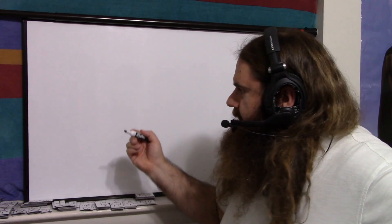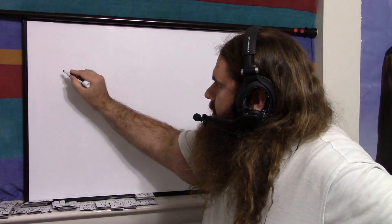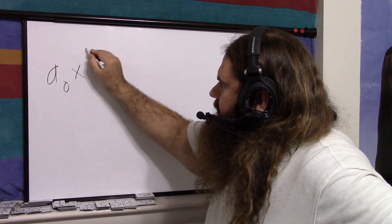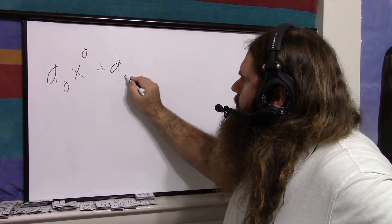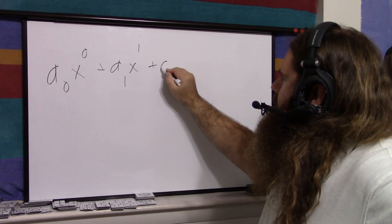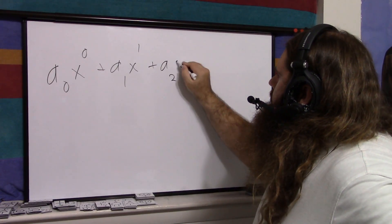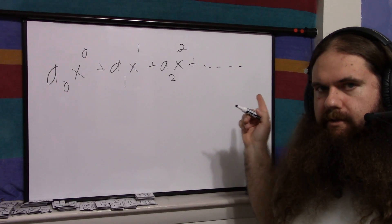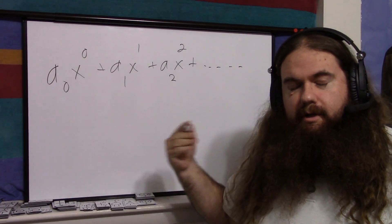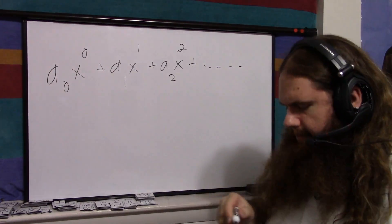If you've ever heard of the Taylor series, it's similar to that, except the Taylor series uses polynomials. Your Taylor series is just a0·x⁰ plus a1·x¹ plus a2·x² and so on. The a0 and so forth are constants — they're your coefficients.